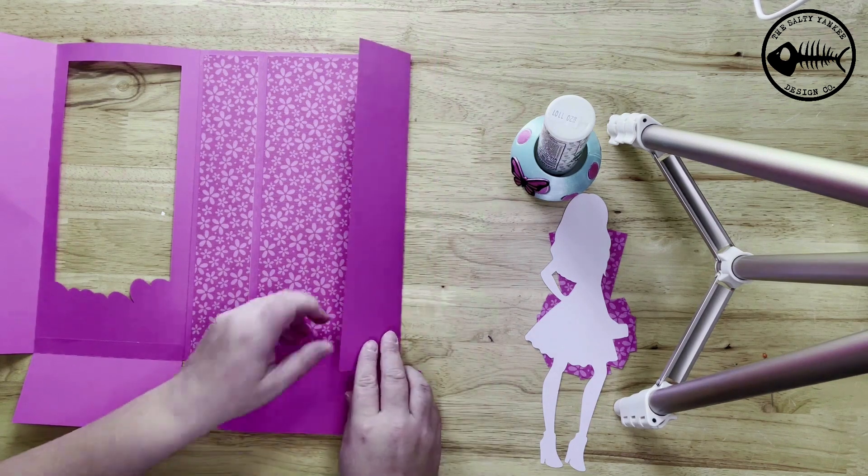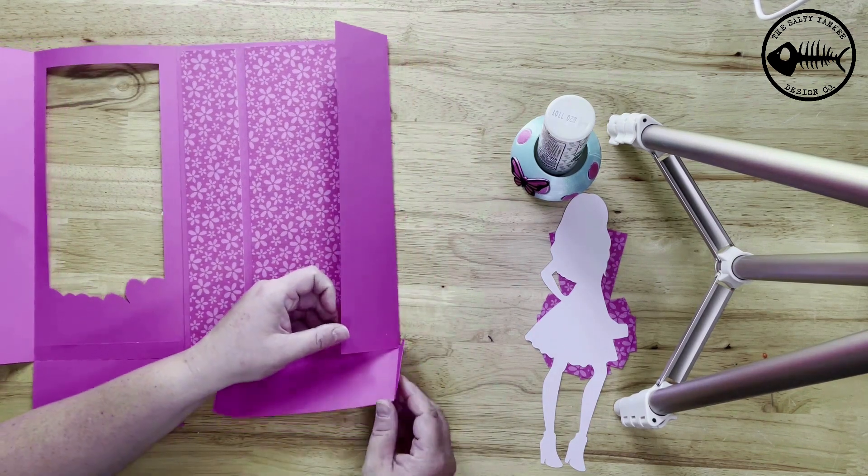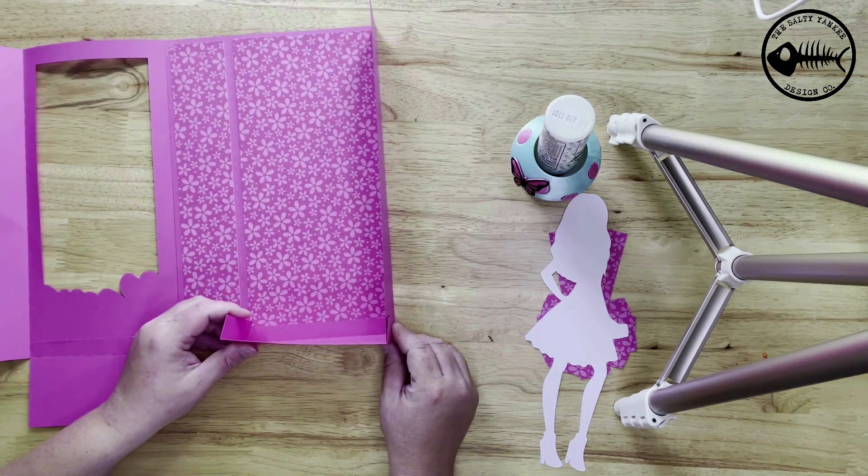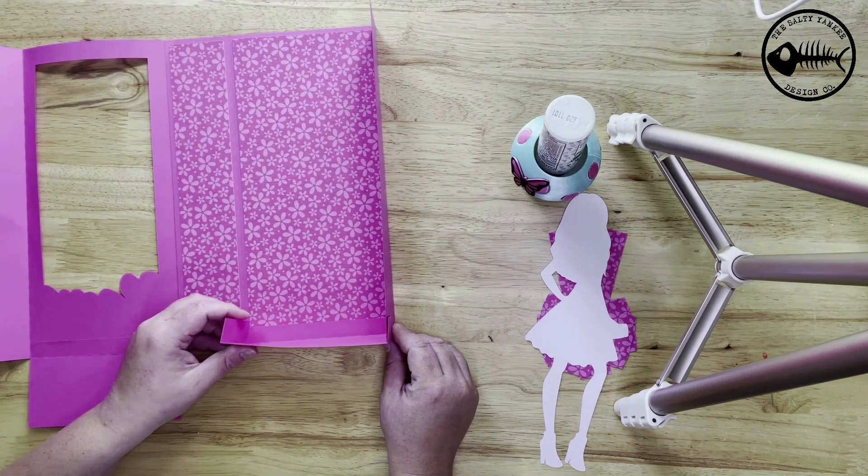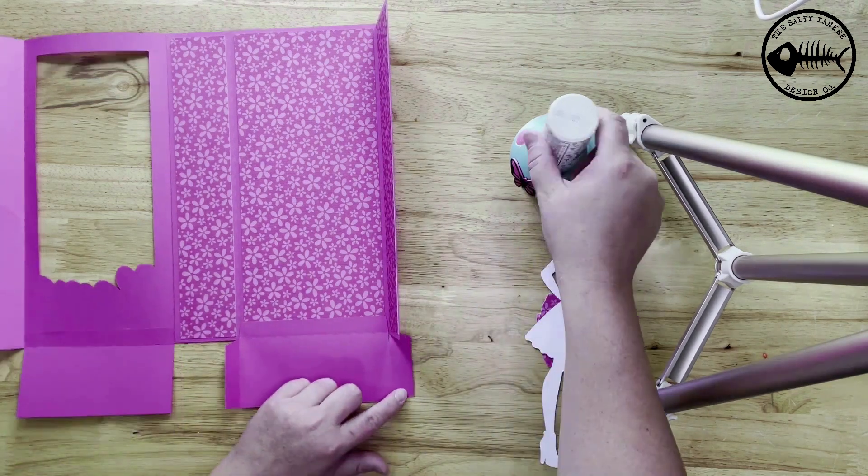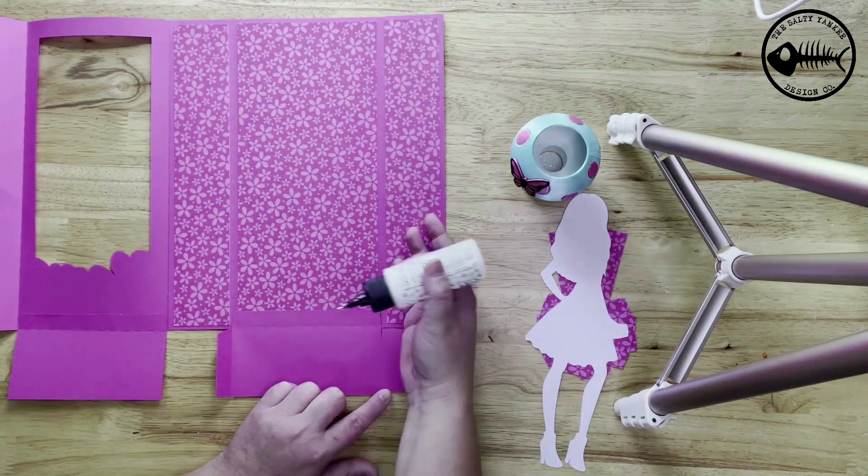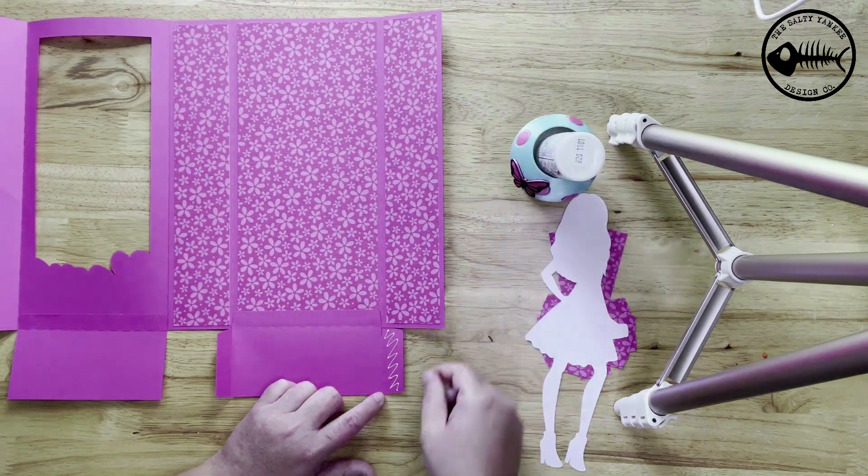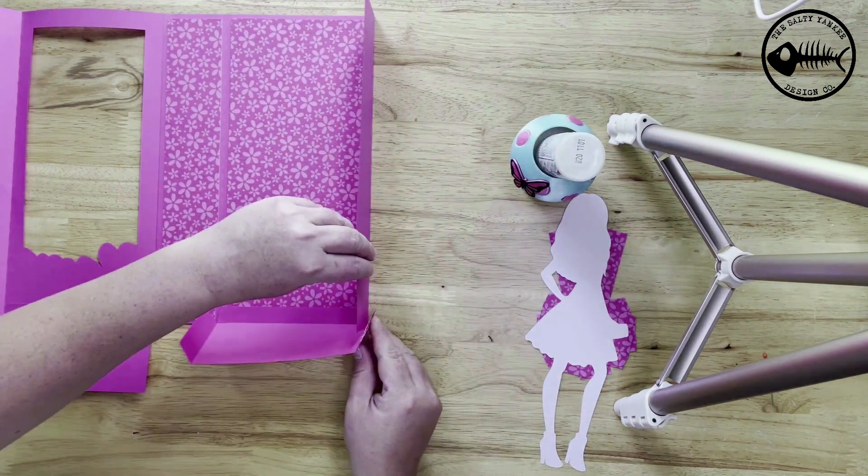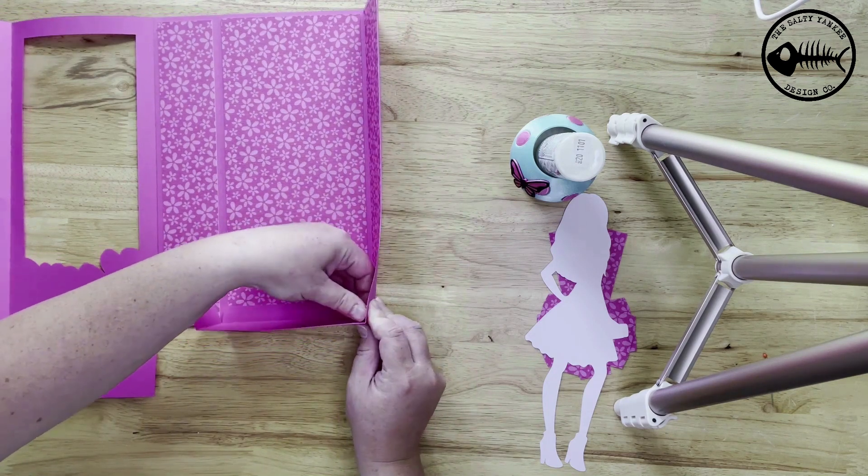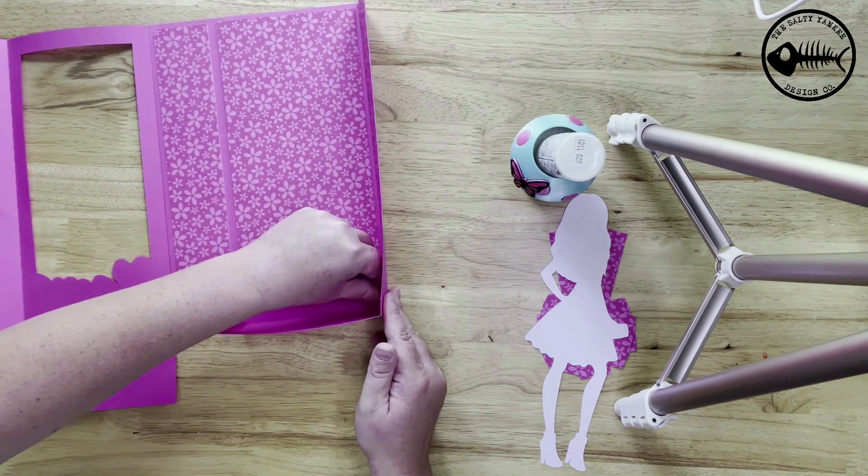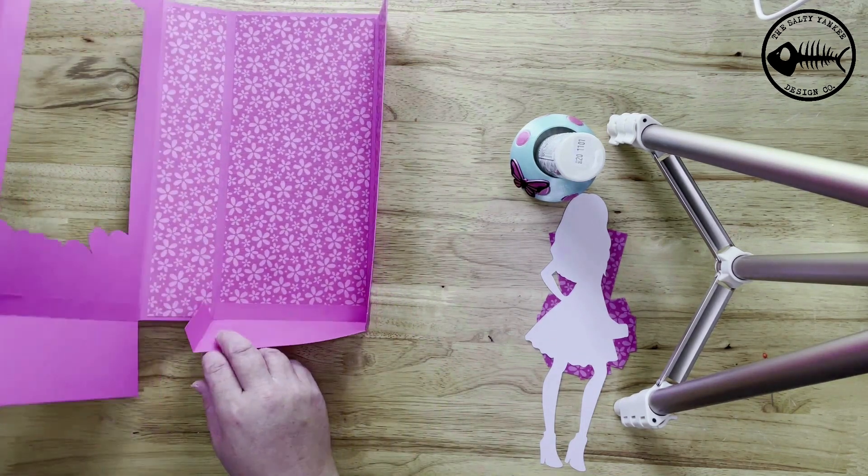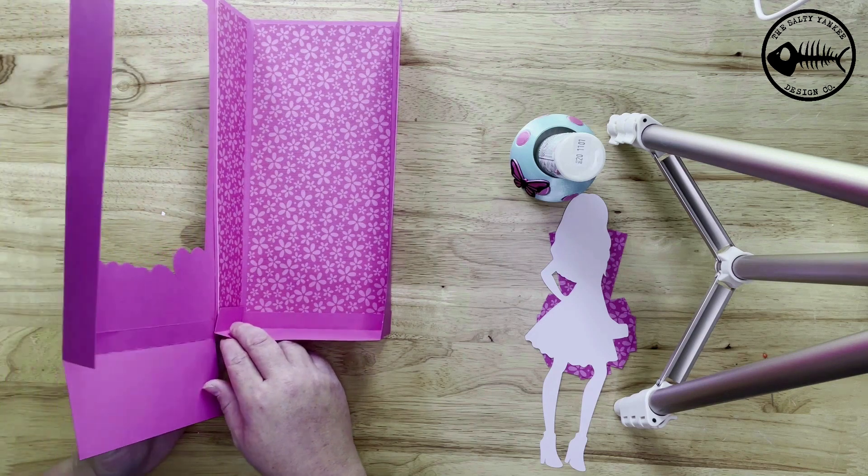So now is when we're going to start folding upward to form the shape of the box. So I'm just going to glue this tab on the right. I'm gluing it on the outside, but for this side, it can be on the inside or the outside. It doesn't matter, because the side we're going to fold onto it is going to overlap it. You'll see that in a second.